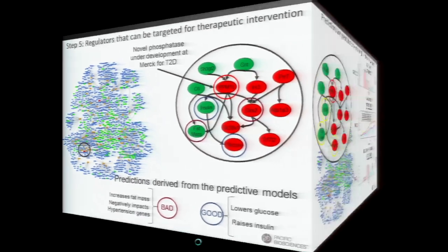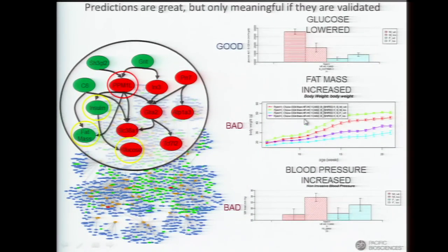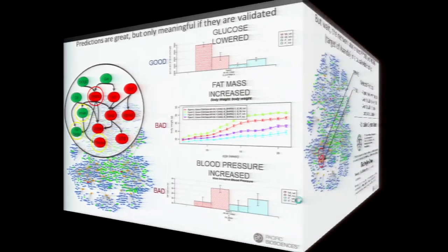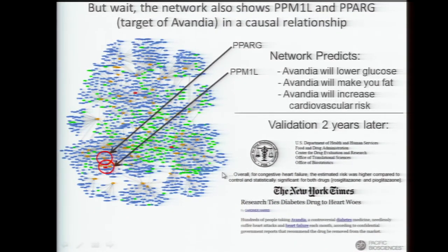This network gives you lots of context to look not just at a single gene, but at what the context is in which it's operating — both with other genes and with clinical traits. In this case, we have some good things happening but also some bad things. When we go in and validate that, our predictions are validated: glucose was lower in a glucose tolerance test, just as predicted. But we also showed that fat mass was increased — the knockdown animal versus wild type, very significant weight difference, all due to fat mass. And as predicted, we had increased blood pressure, potentially increasing cardiovascular risk.